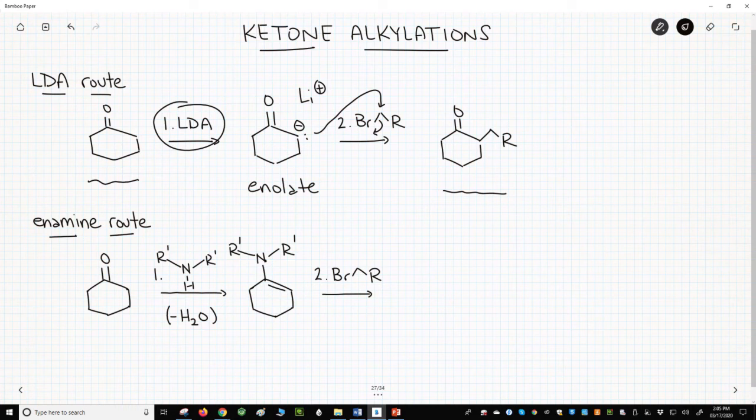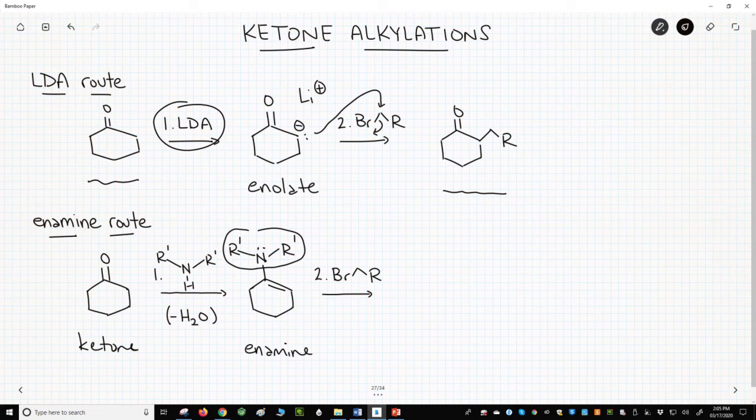At the bottom of the screen is a ketone forming an enamine through a reaction with a secondary amine. The alkene of enamines is fairly electron-rich because the amine with its lone pair is an electron-donating group. The alkene is actually so electron-rich that it can surprisingly attack electrophiles like primary alkyl halides.